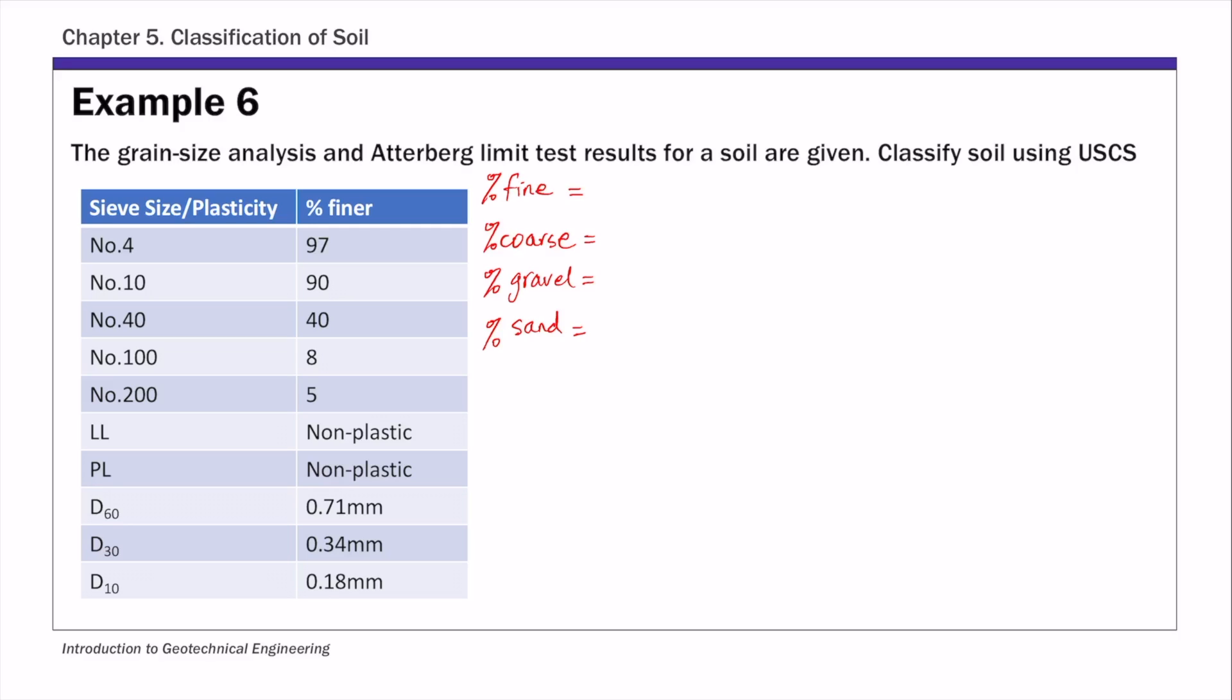We're going to classify this soil using USCS and the first step in this process is to calculate the percent of fine-grained, coarse-grained, gravel, and sand. So for percent of fine, it's basically the percent corresponding to number 200, finer than number 200 sieve. This column percent finer is the same as percent passing. So we have 5% soil passing number 200, so that's 5% of fine-grained soils.